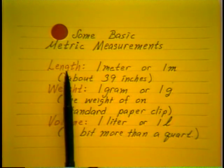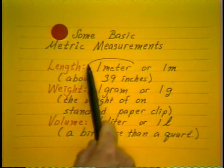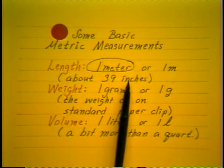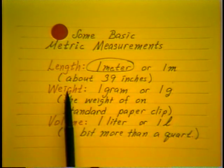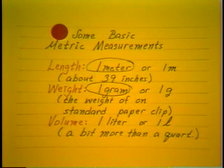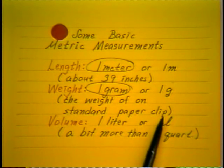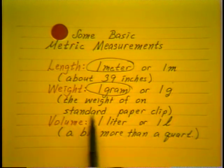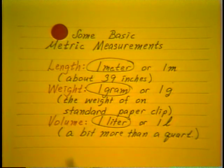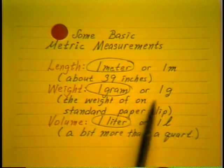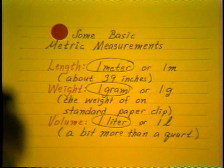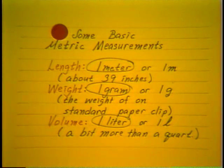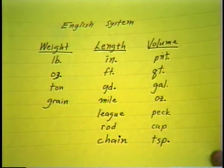In this system, for length there is only one length measurement and that's a meter — about 39 inches long. For weight there is only one unit and that's the gram, about the weight of a standard paper clip, a very small unit of weight. And for volume, one unit: the liter, which is a little bit more than a quart. Can you see that just 3 units is a lot nicer than those, which is only a partial list of ours?